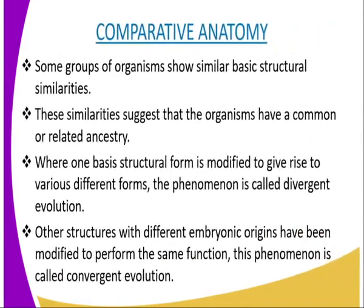When comparing the form and the structure of different organisms, we notice that some groups show basic structural similarities. These similarities suggest that the organisms have a common or related ancestry. Where the anatomical structures show many differences, such organisms have less evolutionary relationships. Where one basic structural form is modified to give rise to various different forms, this phenomenon is called divergent evolution.